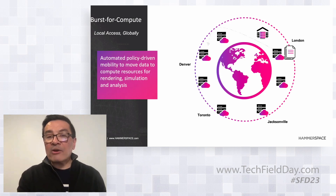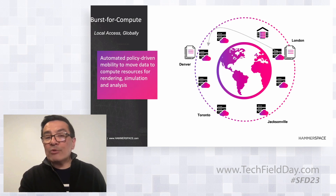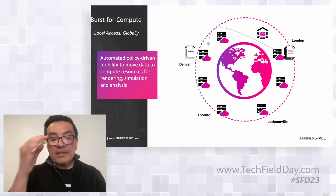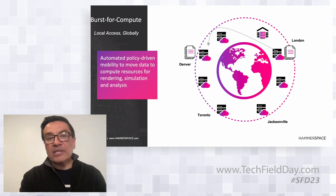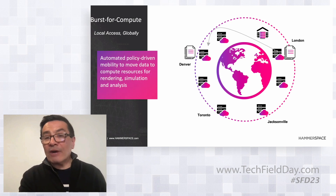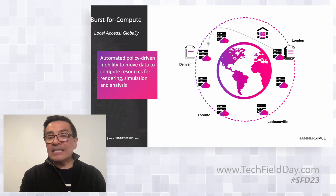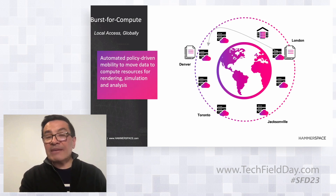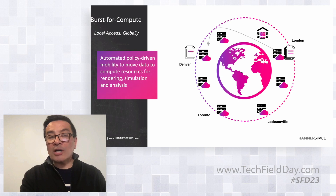With Hammerspace, they are able to move that workload to a region in the cloud with much lower power and cooling costs. This customer will literally save $250,000 per render job, and they easily run 20 render jobs a year — so it can save them millions of dollars just by moving workloads to lower-cost power and cooling regions of the cloud.